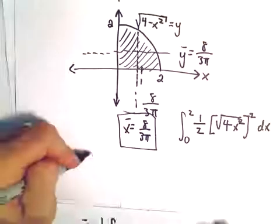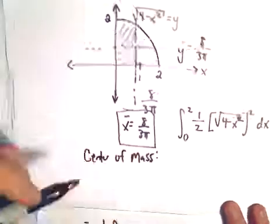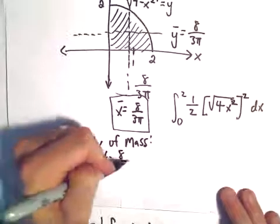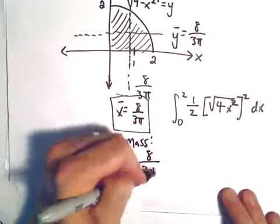So in this case, our center of mass is just going to be the point 8 over 3 pi, comma 8 over 3 pi.